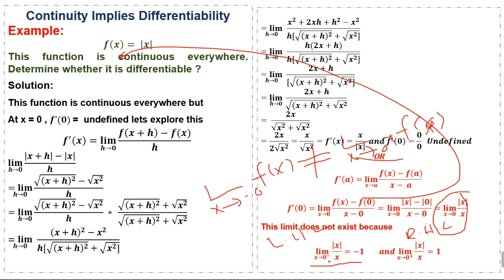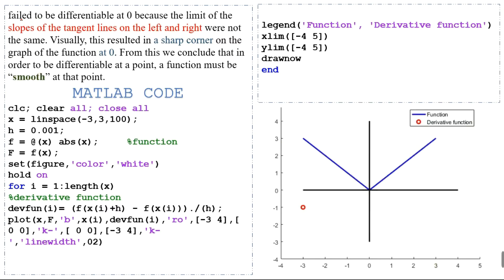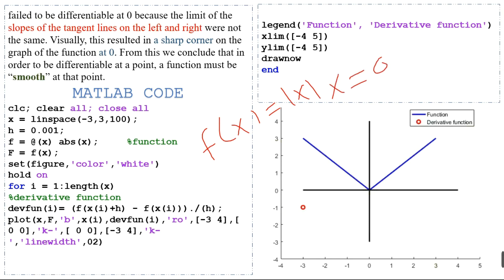This means the slope of the tangent line is different for x < 0 and for x > 0. The function f(x) = |x| fails to be differentiable at x = 0 because the limit of the slope of the tangent line on the left and right are not the same. Visually, this results in a sharp corner on the graph of the function at x = 0.